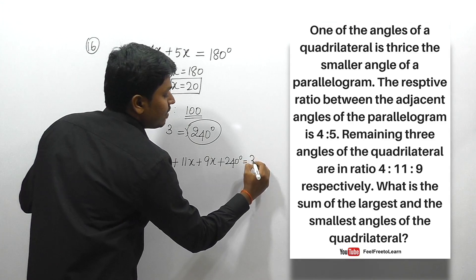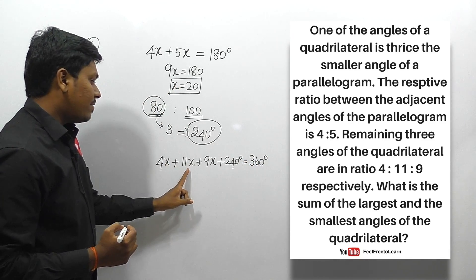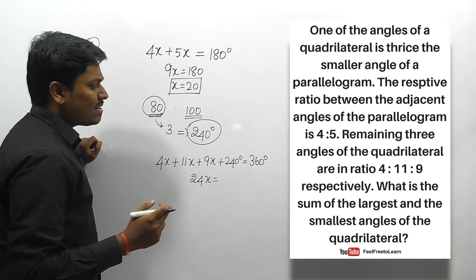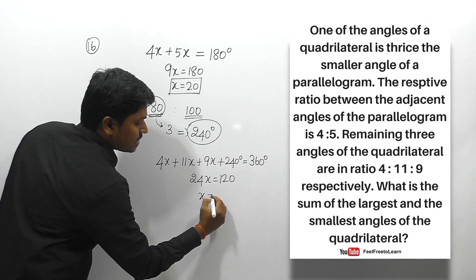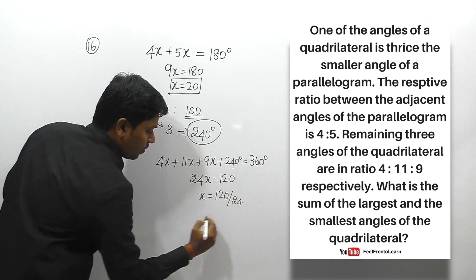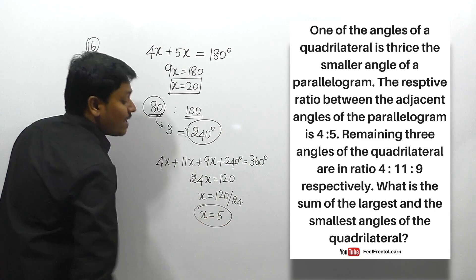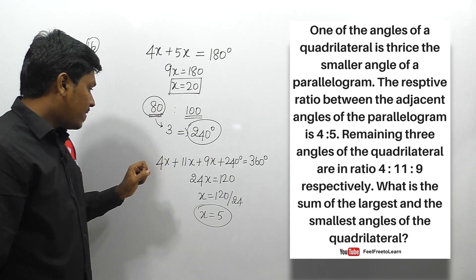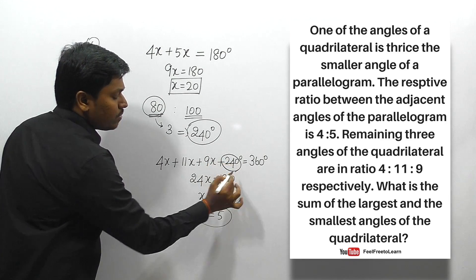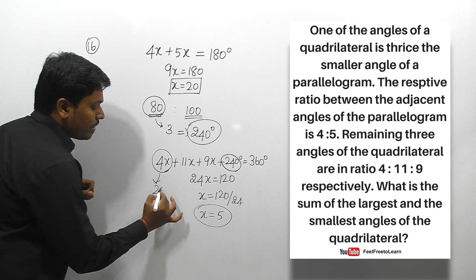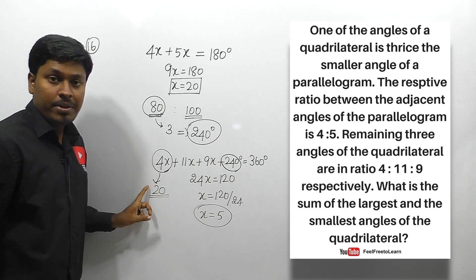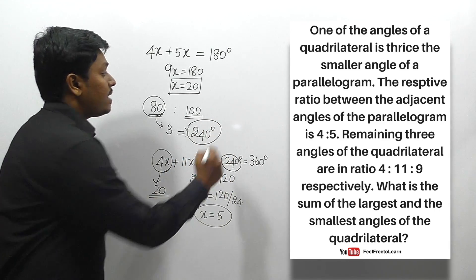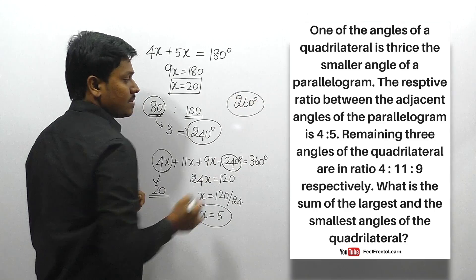The sum of all four angles of a quadrilateral is 360 degrees. So 4x + 11x + 9x + 240 = 360. That gives 24x = 120, so x = 5. The largest angle is 240 degrees and the smallest is 4 × 5 = 20 degrees. Therefore, 240 + 20 = 260 is the answer for question 16.